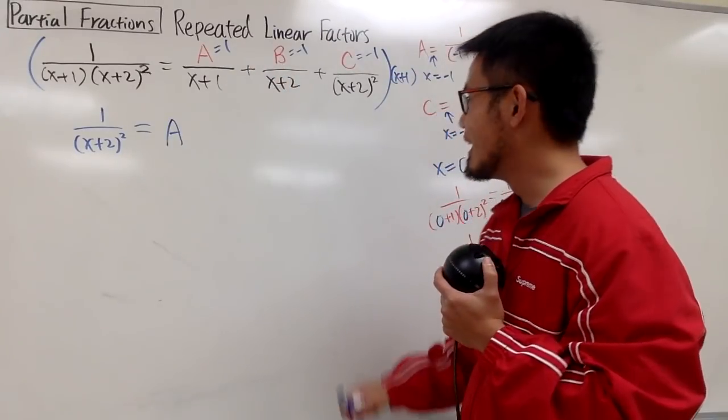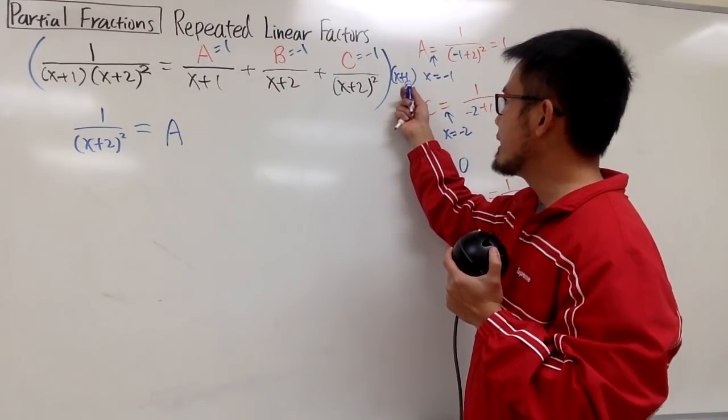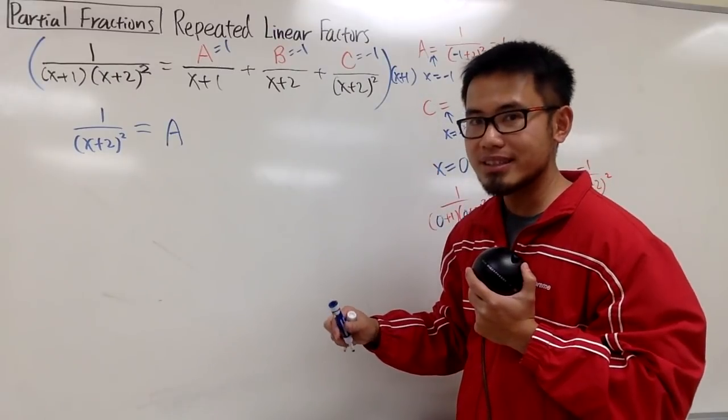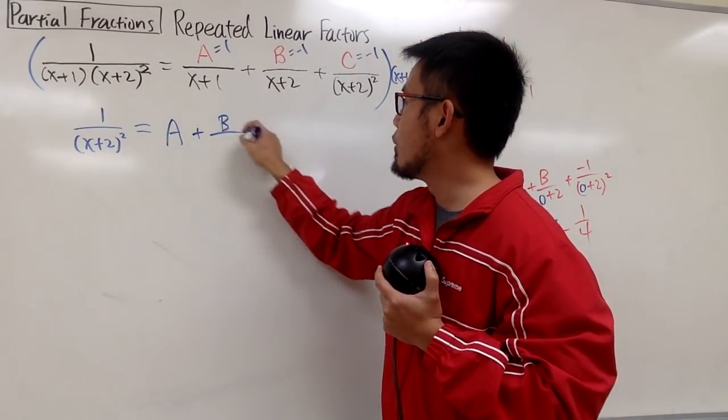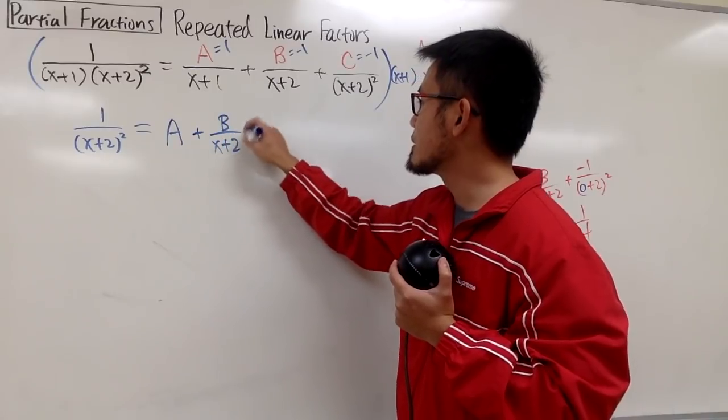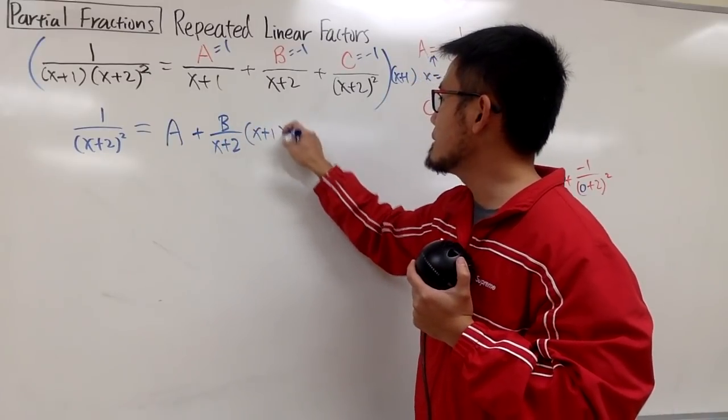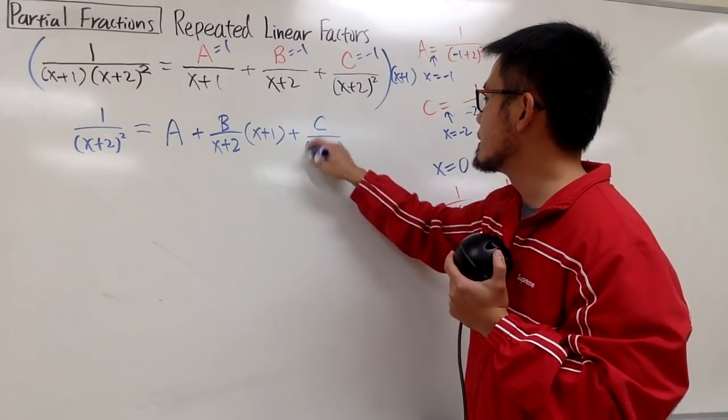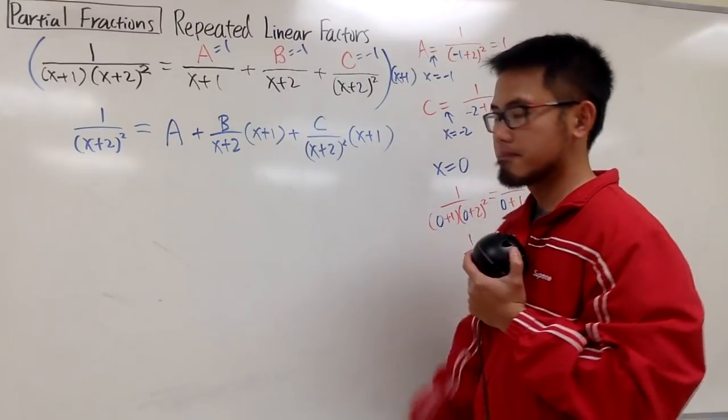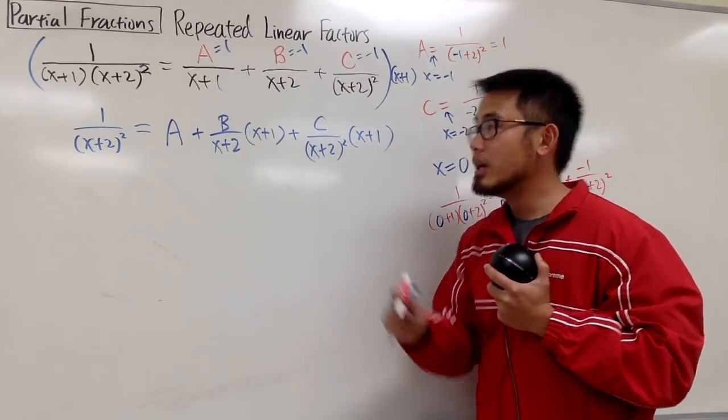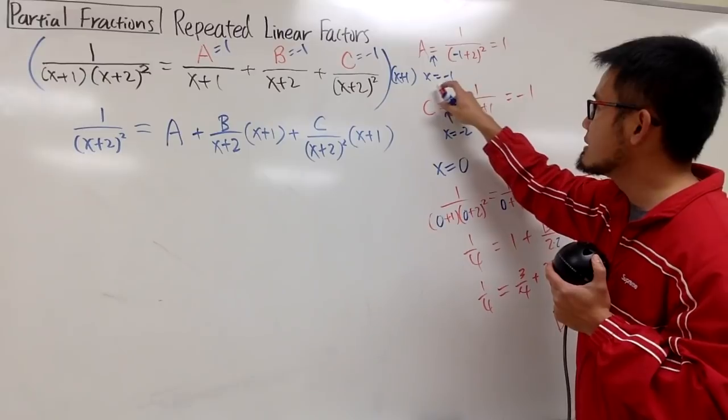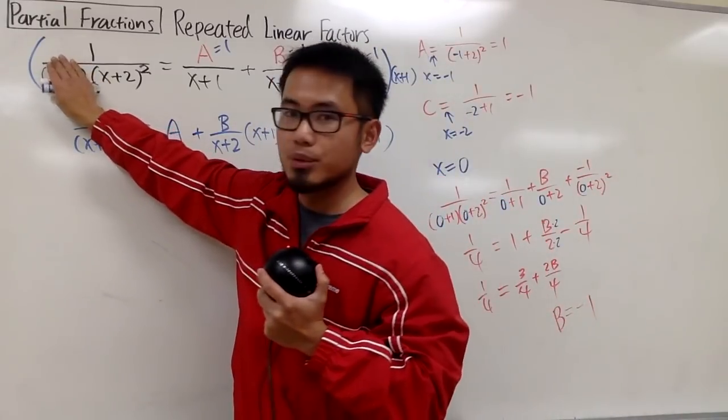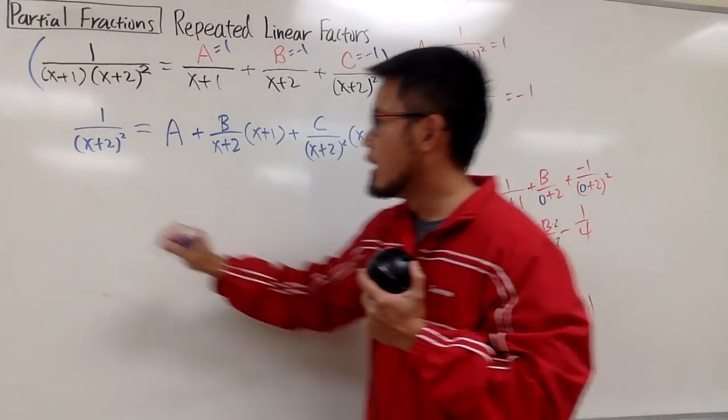When I take this, multiply this and that, nothing cancels out. I will still have the x plus 1, isn't it? So let me just put down plus b over x plus 2 times x plus 1 and then plus c over x plus 2 squared times x plus 1. And remember, earlier when we found A, we let x is equal to negative 1 because I asked you guys how can we make this factor equal to zero. Now, you see, by letting, I will just put this down, by letting x equal to negative 1.